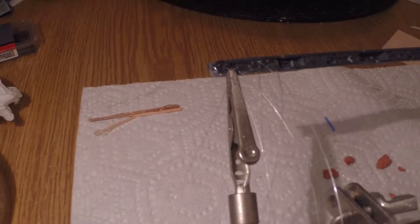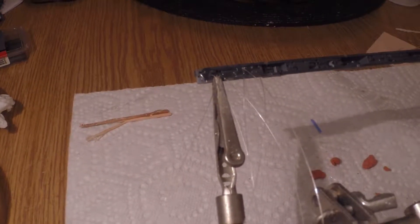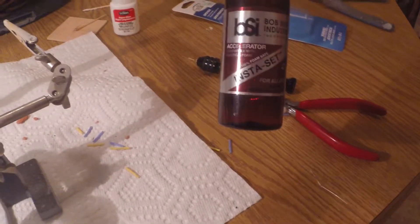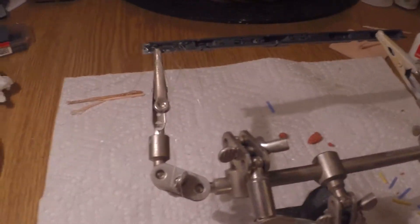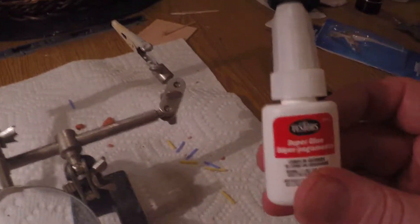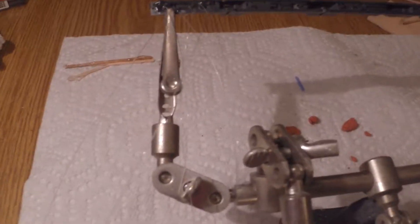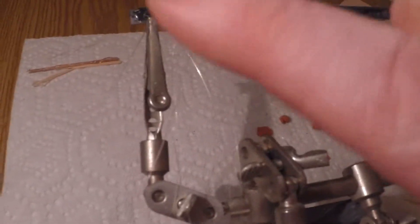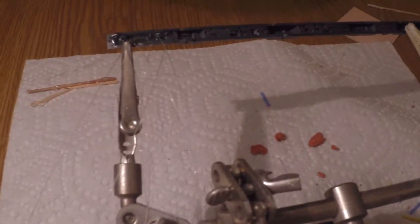You can also get this Bob Smith Insta-set spray from your hobby store and that causes CA glue to set really quickly. But I found with this Testors glue that it sets within a couple of seconds and then I could just keep moving on. And then I just work from left to right because I'm right-handed and I just move across.